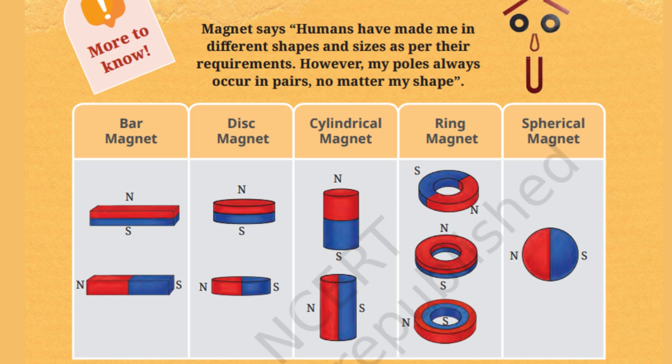But remember this golden rule: poles always exist in pairs. A magnet will always have both a north pole and a south pole. You can't have just a north pole or just a south pole — they always come together like best buddies.